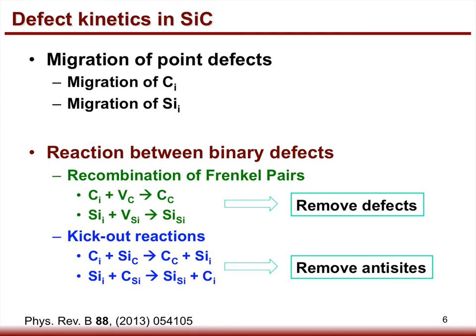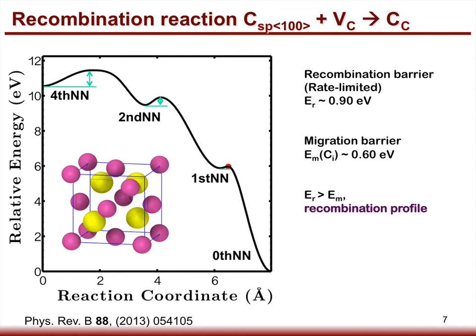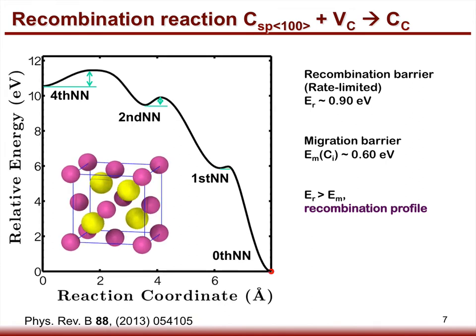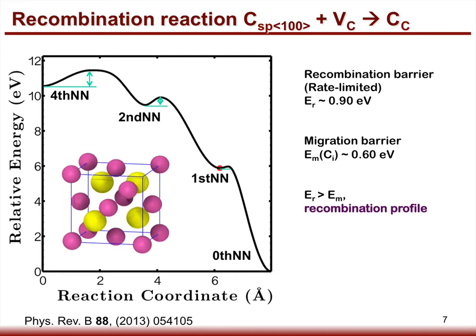First, let's look at the recombination reaction between carbon interstitial and carbon vacancy. The recombination path starts from the fourth nearest neighbor, passing the second and first nearest neighbor, then recombines with the vacancy. Along this path, the recombination barrier was calculated to be 0.9 eV, which is larger than the migration barrier of the carbon interstitial at 0.6 eV. Such an energy landscape is considered to have a recombination profile, and the rate-limiting barrier is the recombination barrier of 0.9 eV.